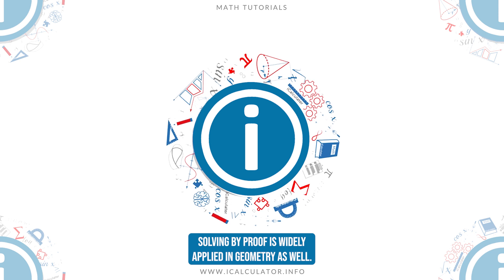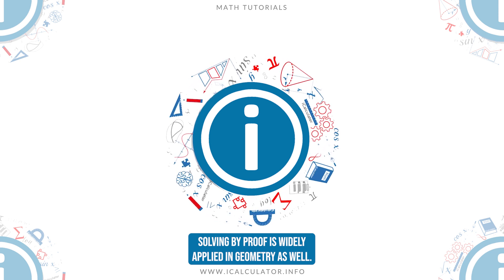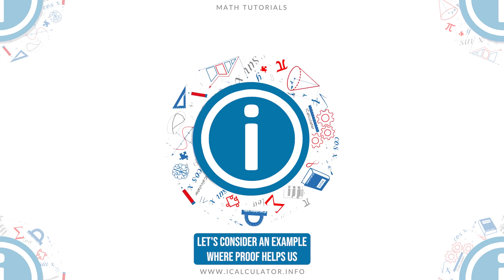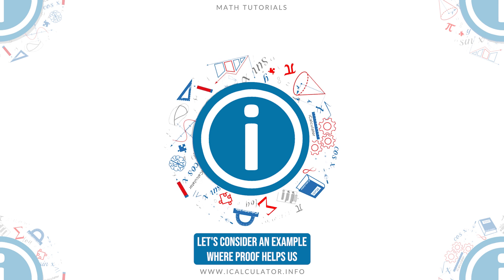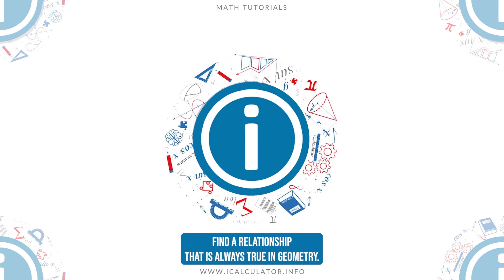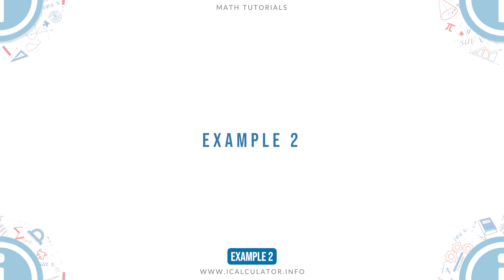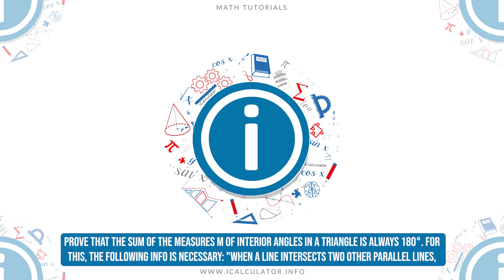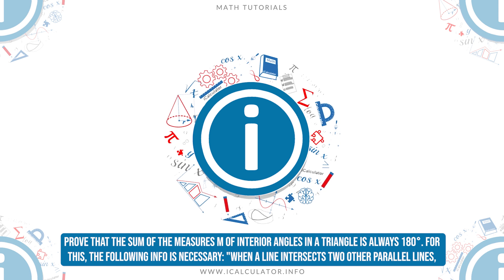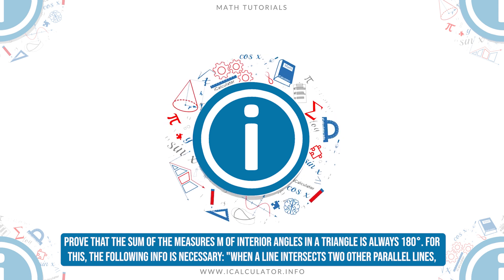Solving by proof is widely applied in geometry as well. Let's consider an example where proof helps us find a relationship that is always true in geometry. Example 2: Prove that the sum of the measures of interior angles in a triangle is always 180 degrees.